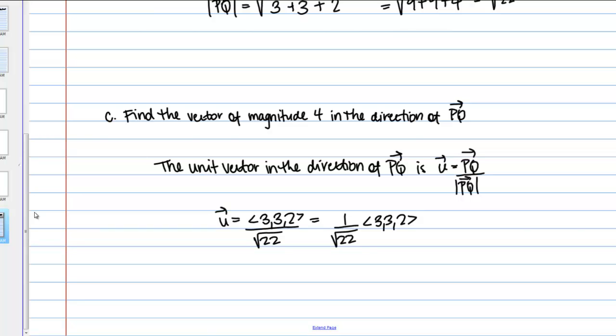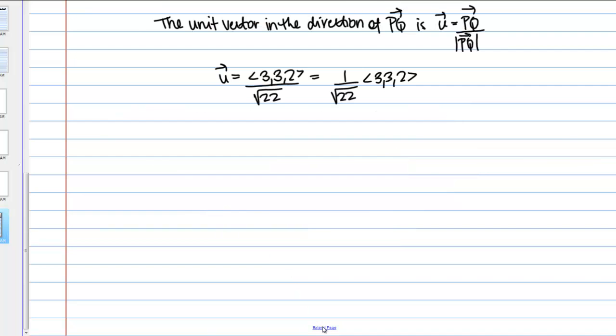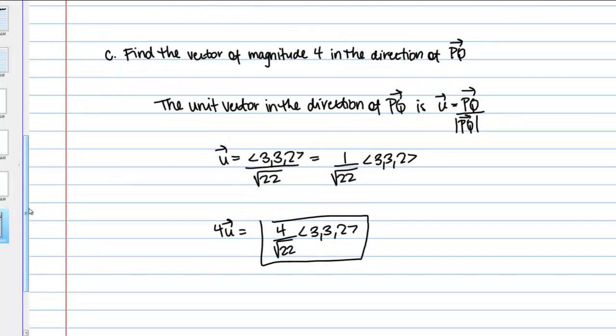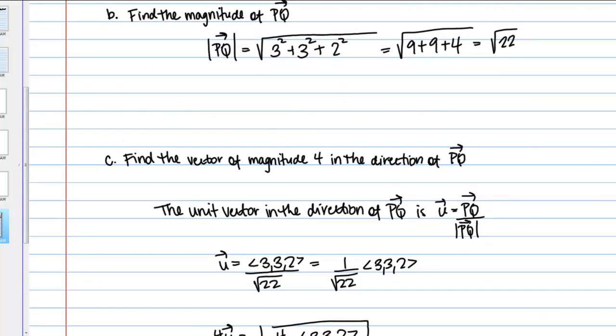Now, what we want is a vector of magnitude 4 in the direction of PQ. All we have to do is simply multiply our unit vector by a scalar of 4. Because this unit vector has a magnitude of 1 currently, we want it to have a magnitude of 4. All we're going to get then is 4 over the square root of 22 times this vector (3, 3, 2). This is what we're looking for. This is a vector of magnitude 4 in the direction of PQ.